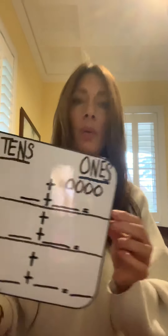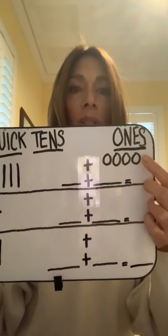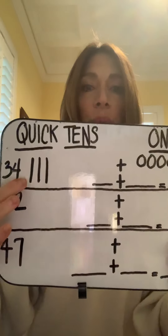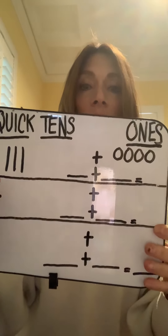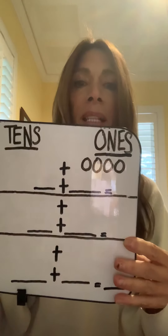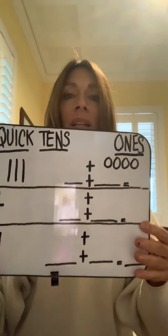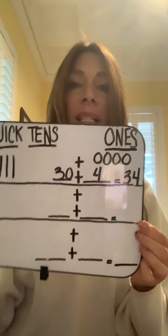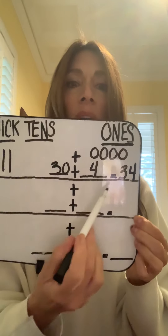And I would draw four ones. For quick ones, we simply draw either little squares or little round counters: one, two, three, four. So now we've shown thirty-four with three quick tens — meaning there are three tens in thirty-four — and four ones. Three tens equal thirty, and four ones equal four. So we can also write it as thirty plus four equals thirty-four.